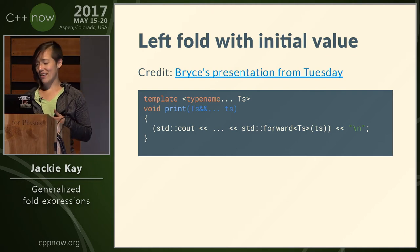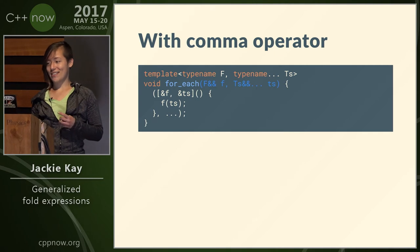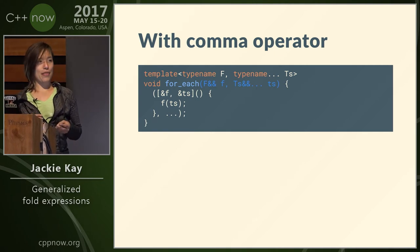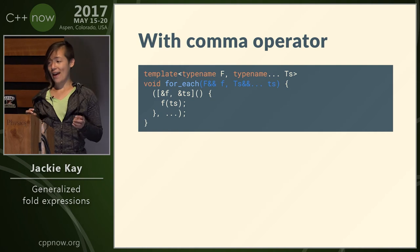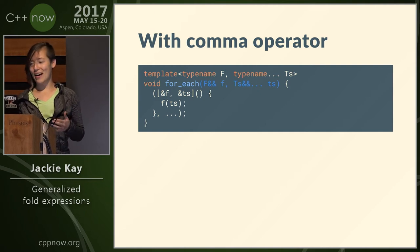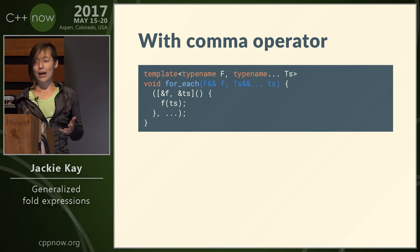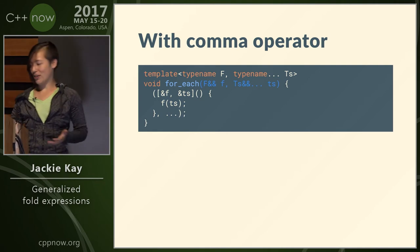This is from Bryce's presentation — I grabbed a lot of stuff from people for this lightning talk. You can use the comma operator and essentially write a foreach with a lambda and a set of generic pack of arguments. This is cool because it means you can iterate over a heterogeneous for loop.